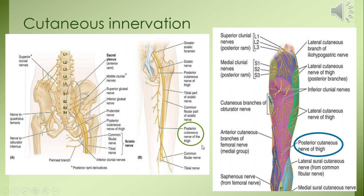The cutaneous innervation of the back of the thigh is through the posterior cutaneous nerve of the thigh, which arises from the sacral plexus — the anterior rami of S1, S2, S3. This nerve enters the gluteal region through the greater sciatic foramen, inferior to the piriformis muscle, then enters the back of the thigh where it pierces the fascia lata to innervate the area. The main part of the back of the thigh is supplied by this nerve, while some medial parts are supplied by the obturator nerve and some lateral projections come from the lateral cutaneous nerve of the thigh. The posterior cutaneous nerve also supplies the inferior quadrant of the gluteal region.